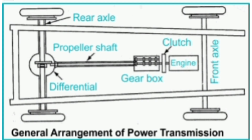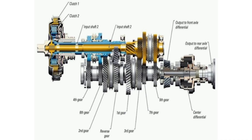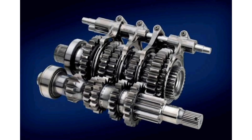The advantages of the transmission system include: gear ratio flexibility, allowing adaptation to different driving conditions for optimal performance and fuel efficiency; power distribution, transmitting engine power to the wheels enabling the vehicle to move; smooth acceleration, facilitating seamless speed changes for a comfortable driving experience; fuel efficiency, optimizing engine performance and conserving fuel by adjusting gear ratios; control, providing the driver with control over the vehicle speed and power output; and towing capacity, enhancing the ability to tow heavy loads with appropriate gear selection.